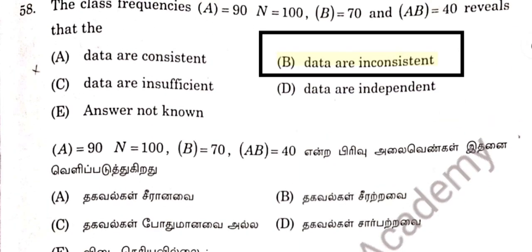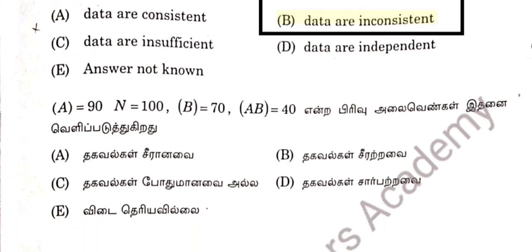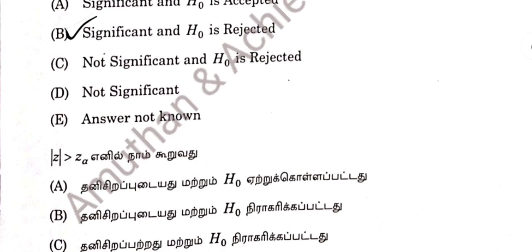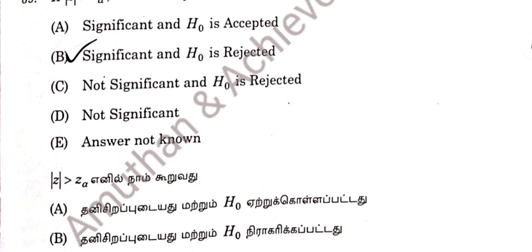Question 58: Class frequency — the best money data are inconsistent. 58 option B. Question 59: The modulus of Z1 is significant and H0 is rejected. 59 option B is correct answer.